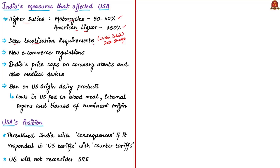India has also banned US-origin dairy products. Cows in India are fed a vegetarian diet including grasses and hay. But the diet of USA's cows includes blood meal, internal organs and tissues of ruminant origin — all non-vegetarian diets. So India has banned USA's dairy products citing cultural reservations. This move made US dairy companies very angry, and they even proposed to the US government to withdraw the GSP status. That is why USA is now reconsidering the GSP status given to India.